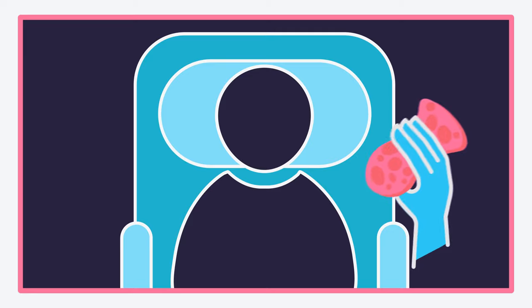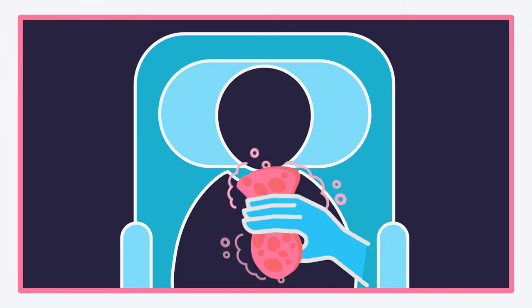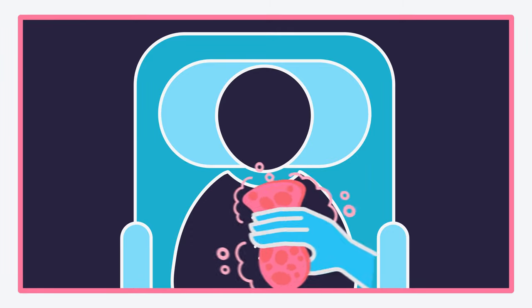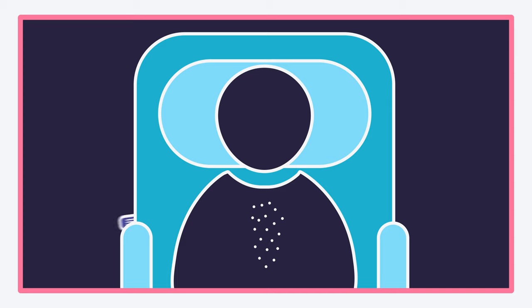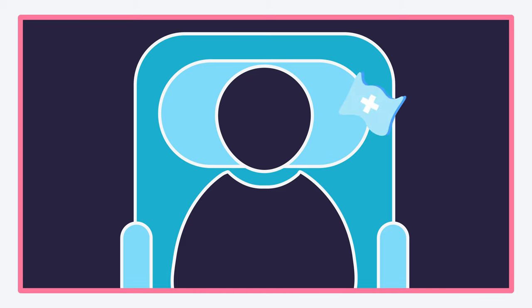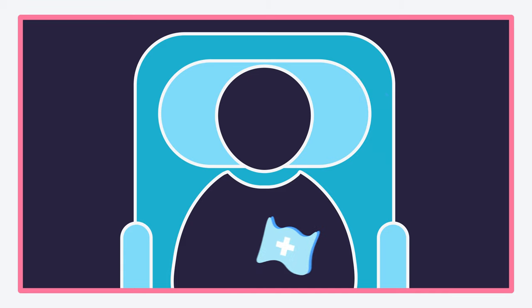Prepare the skin. If the patient's skin is dirty, clean with soap and water and then dry. Patients with chest hair should have hair at the electrode placement sites removed. If the skin is oily or the patient has applied any creams or lotions, use an alcohol wipe to clean each electrode placement site.